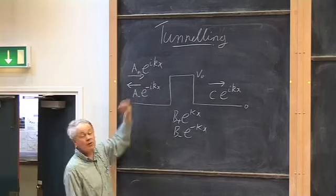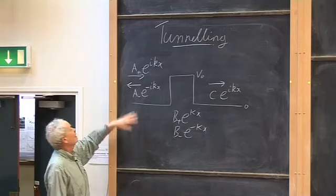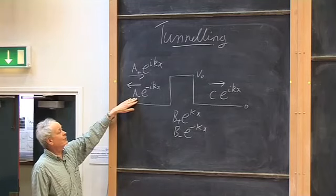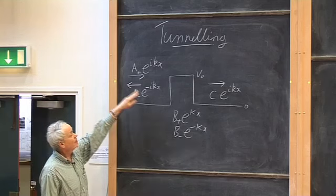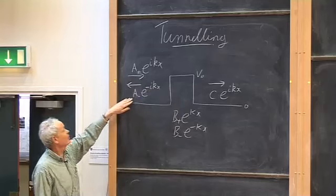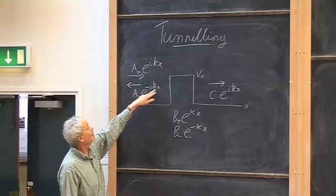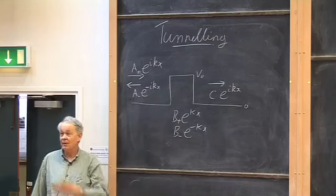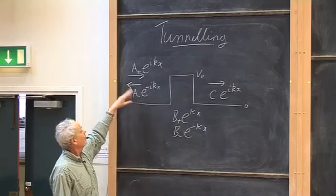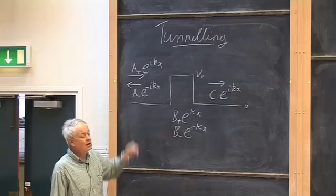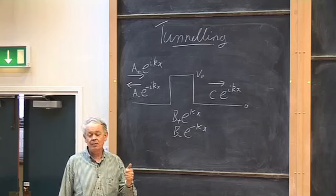These are particles with well-defined momentum approaching the barrier. We expect to see some of these particles reflected classically. If the energy of these incoming particles were less than V0, they would all be reflected. So we put in a reflected wave that goes like e to the minus ikx. Remember the time dependence in quantum mechanics — for a state of well-defined energy it is e to the minus iE over h-bar times t.